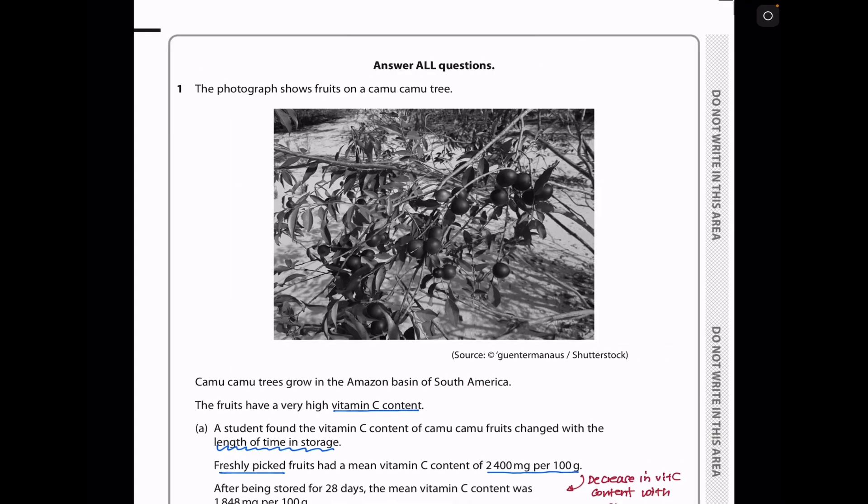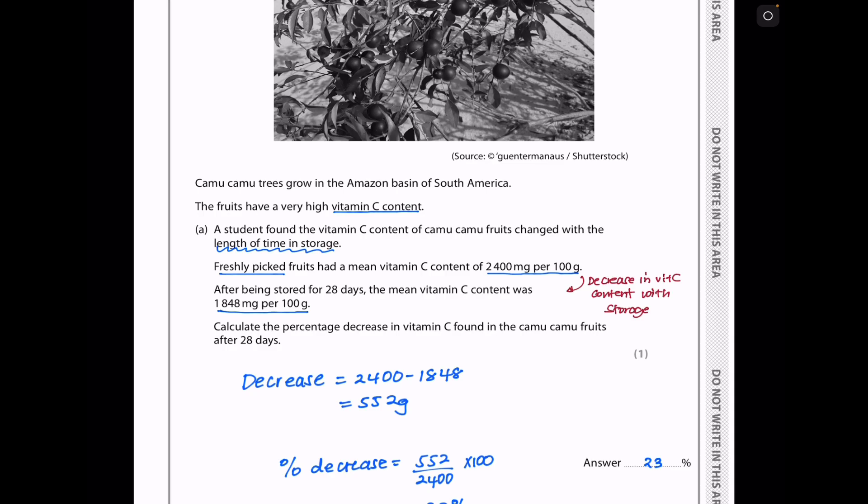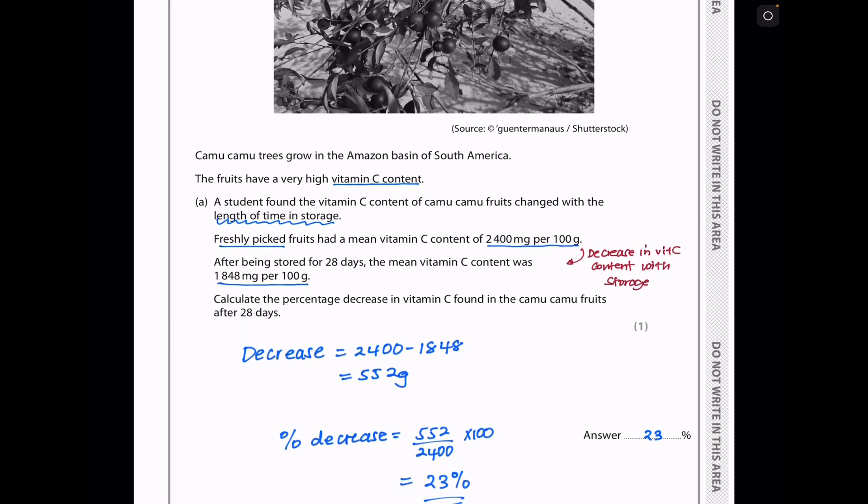Question 1. The photograph shows fruits on a kamukamu tree. This is the tree they're talking about. Kamukamu trees grow in the Amazon basin of South America. The fruits have a very high vitamin C content. In part A, the student found the vitamin C content of kamukamu fruits changed with the length of time in storage. Freshly picked fruits had a mean vitamin C content of 2400mg per 100g. After being stored for 28 days, the mean vitamin C content was 1848mg per 100g.